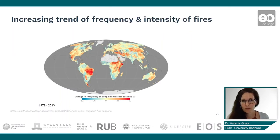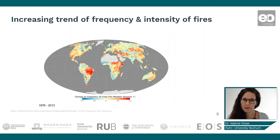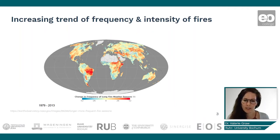We have an increasing trend of frequency and intensity of fires. When we look at this map, which shows a change in frequency of long fire with the seasons in percentage, we see that all over the globe there are patterns showing this increasing frequency. Especially in Eastern Africa, but also in Brazil towards the Amazon region and Southern America, we can clearly see these very high increasing patterns.